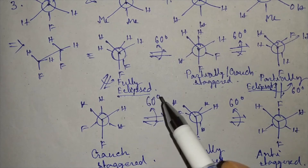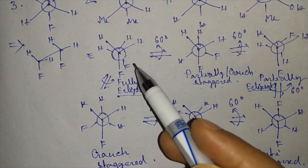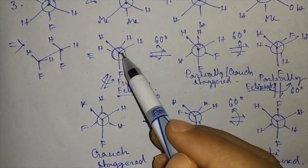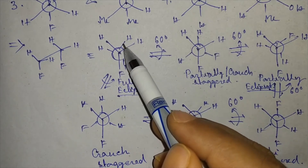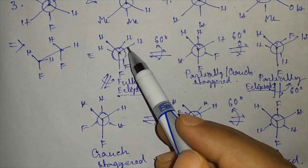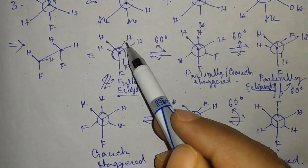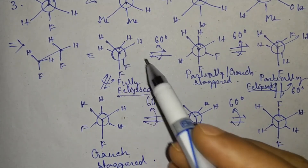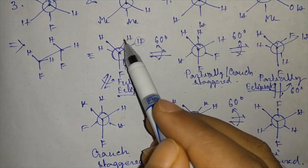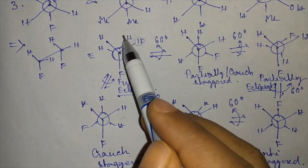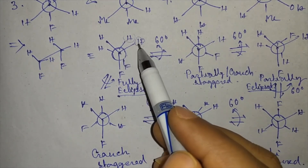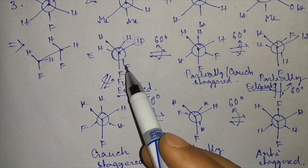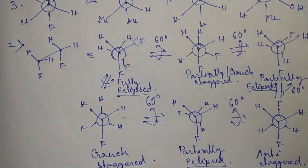If we compare the stability between the eclipsed and staggered conformations, in the eclipsed conformer the dihedral angle between the bonds is zero degrees, so there is electronic repulsion between the bonds. The atoms bonded here are also close to each other, creating a repulsive force. So the eclipsed conformer has lesser stability than the staggered conformer.